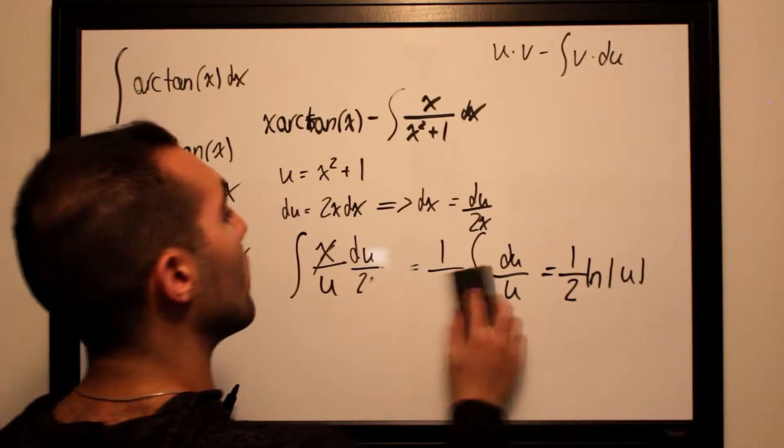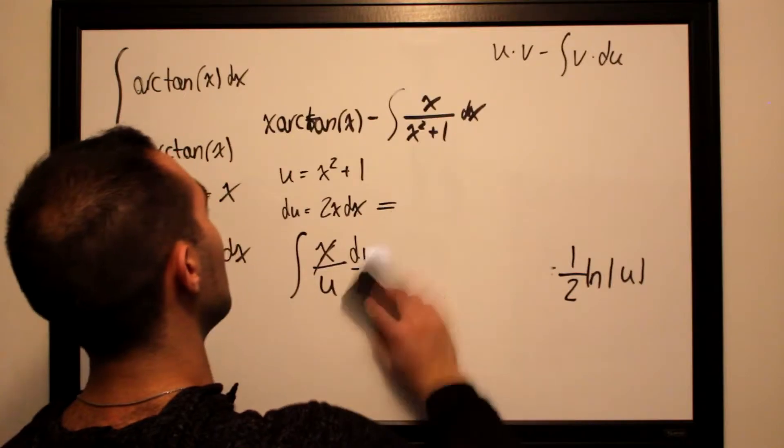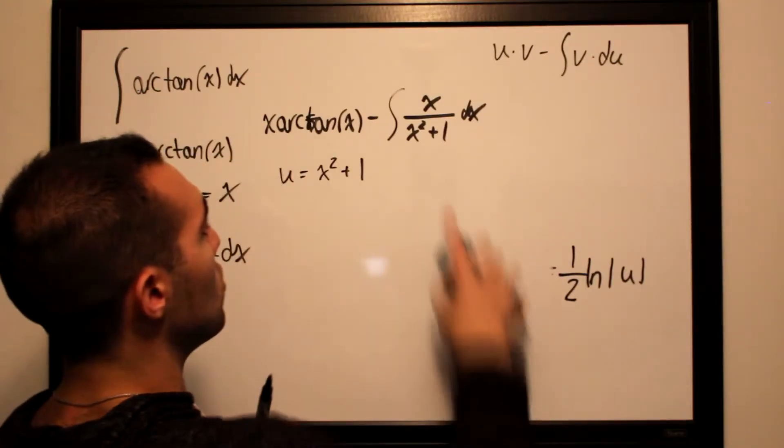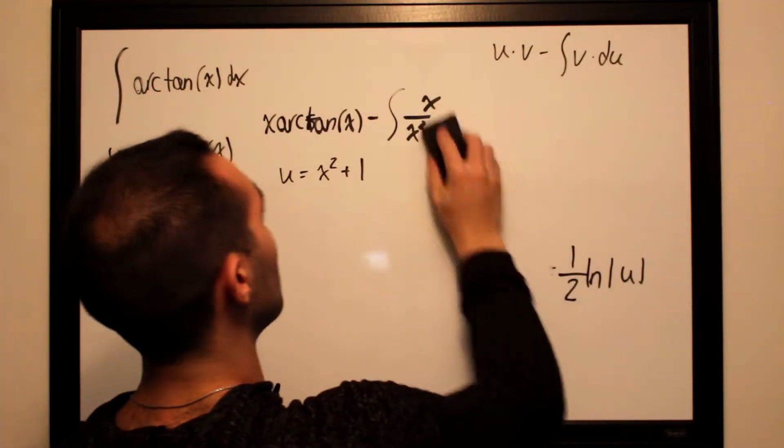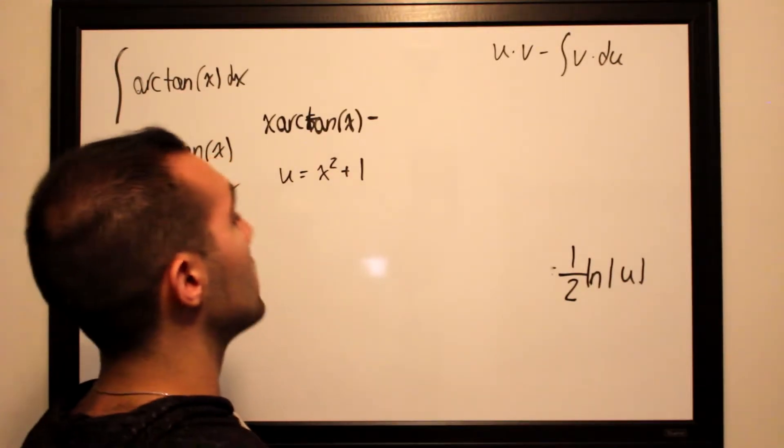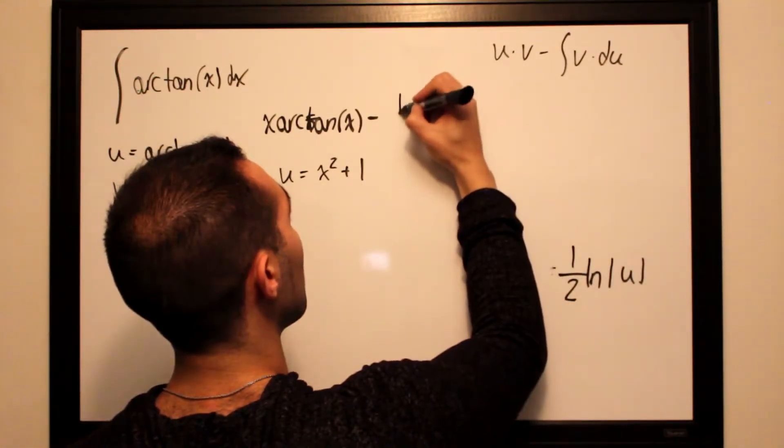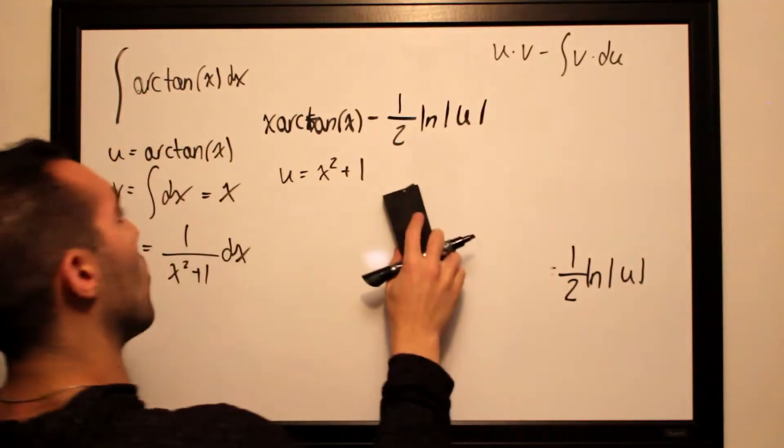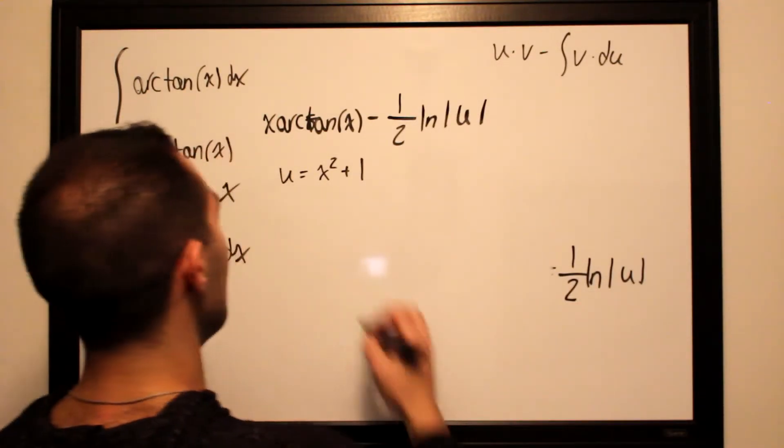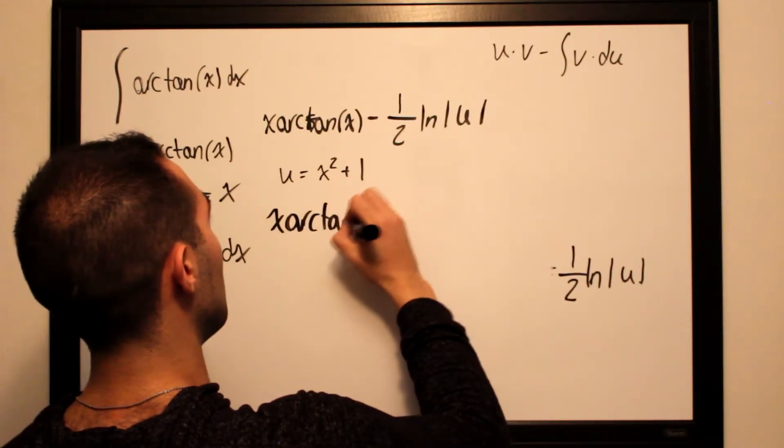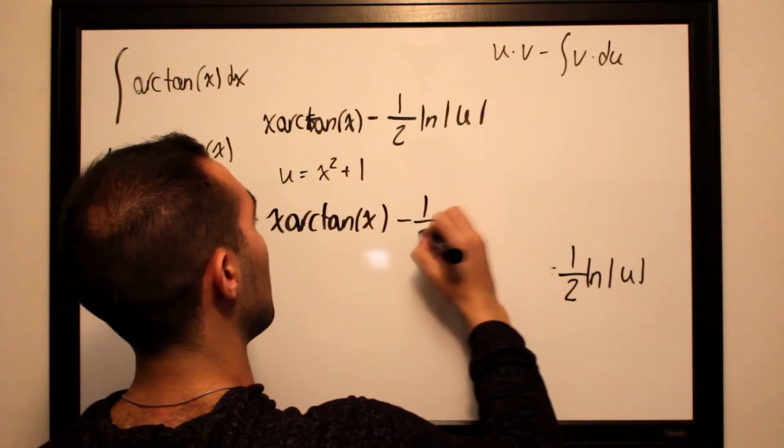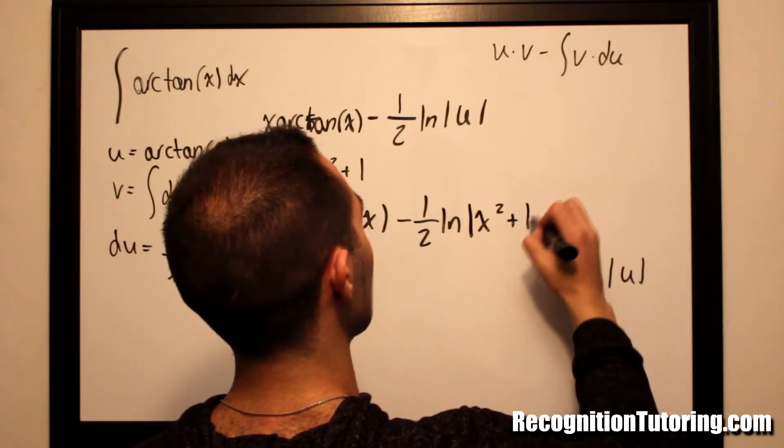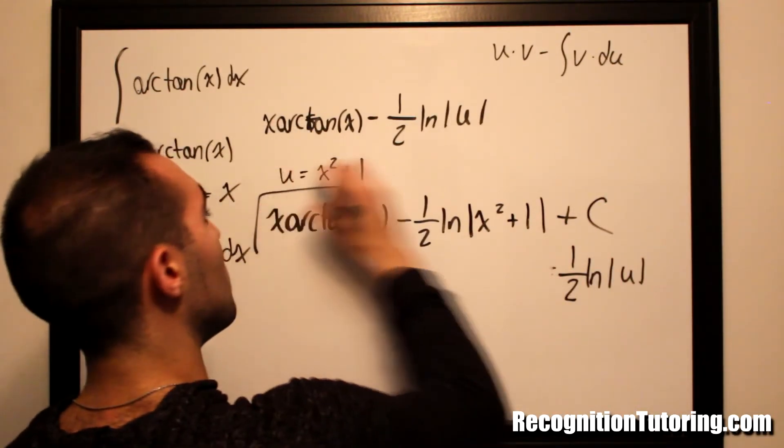Our initial u was x squared plus 1, so we substitute this result into the integral. This becomes minus a half ln of absolute u. Converting everything back in terms of x, we have x arctan x minus a half ln of absolute value of x squared plus 1, and then to top it all off, plus c.